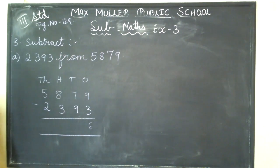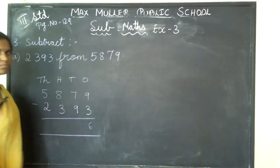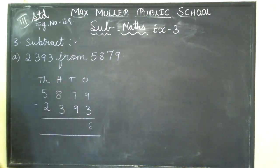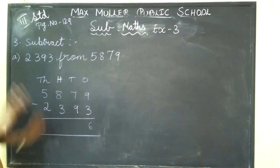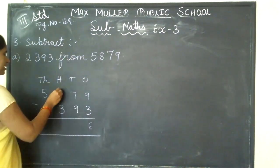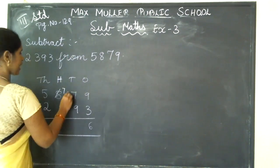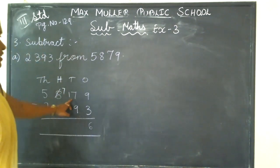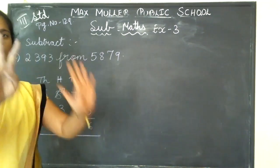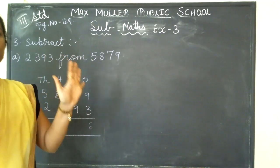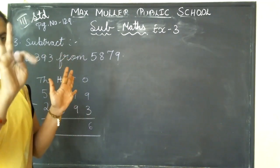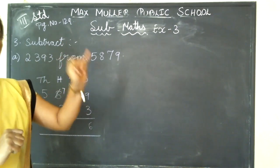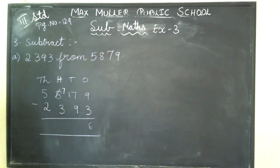Next, in the tens place you see 7 minus 9. Can I minus a bigger number from a smaller number? No. So I will go to the hundreds place. In the hundreds place, what is the number? 8. 8 minus 1 is 7, so write 7 here. I am carrying 1 to the tens place, so it becomes 17. 17 minus 9 — keep 9 on your fingers, start counting backwards: 17, 16, 15, 14, 13, 12, 11, 10, 9. The next number is 8. So write 8.